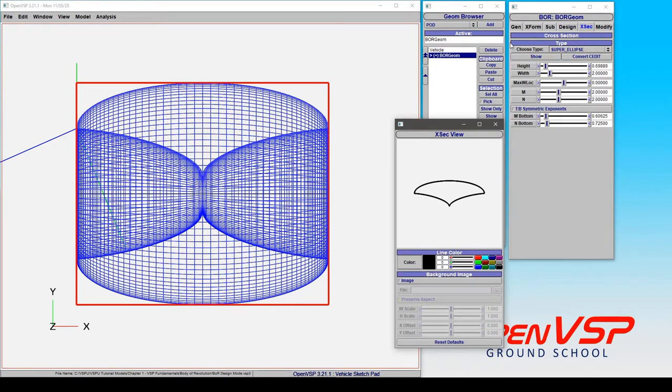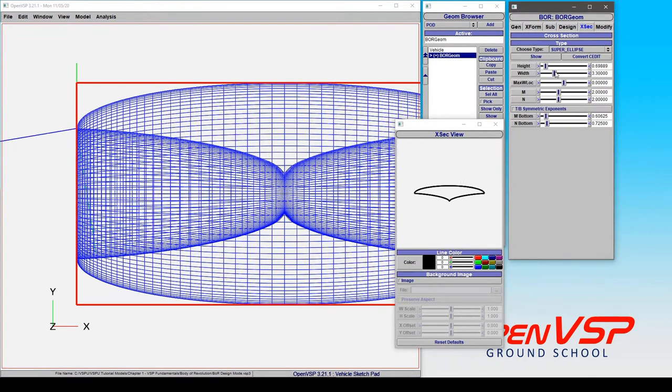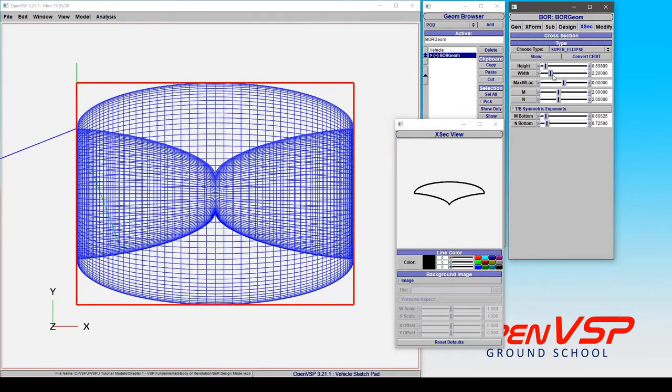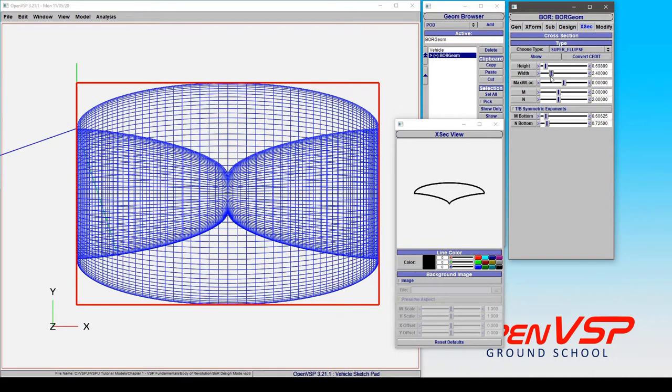We already know that cross sections adjust the length of our body of revolution. Now let's go ahead and leave that alone for now and we're going to play with some of the parameters here.